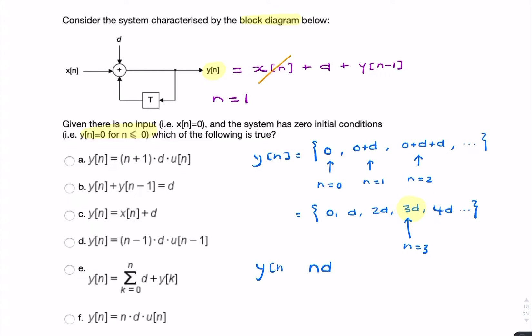So we can say y of n equals n times d, starting when n equals 1. We might as well say u of n starting when n equals 0, because 0 times d is 0 anyway. That's my final answer, the expression for y of n we're looking for, and that's this final option here.